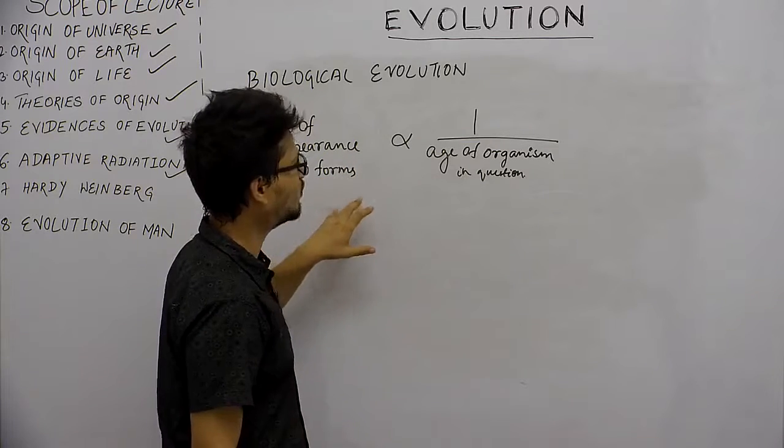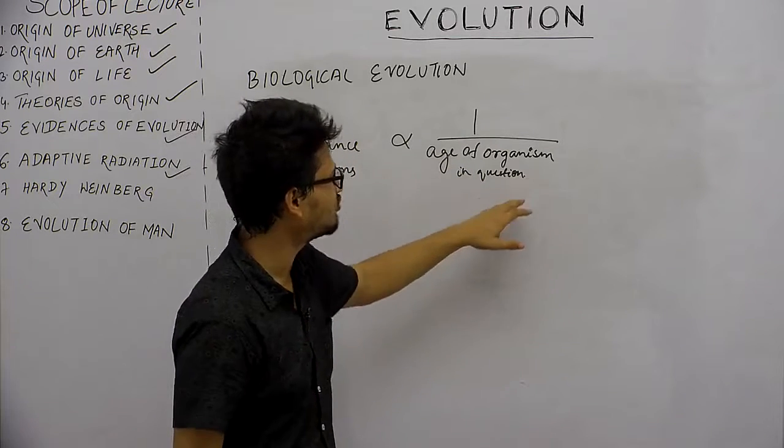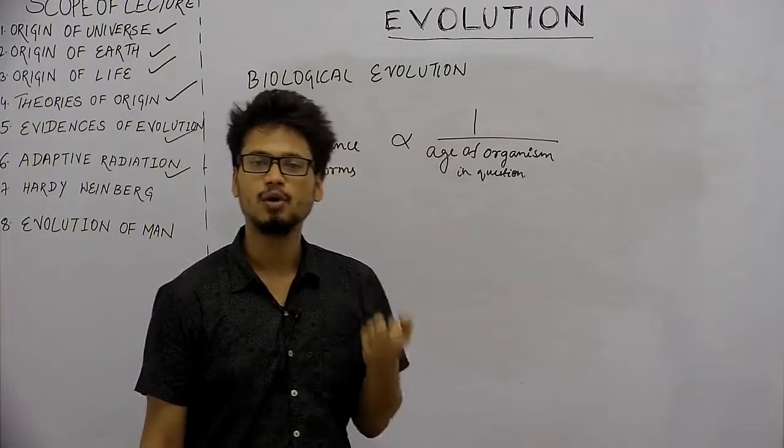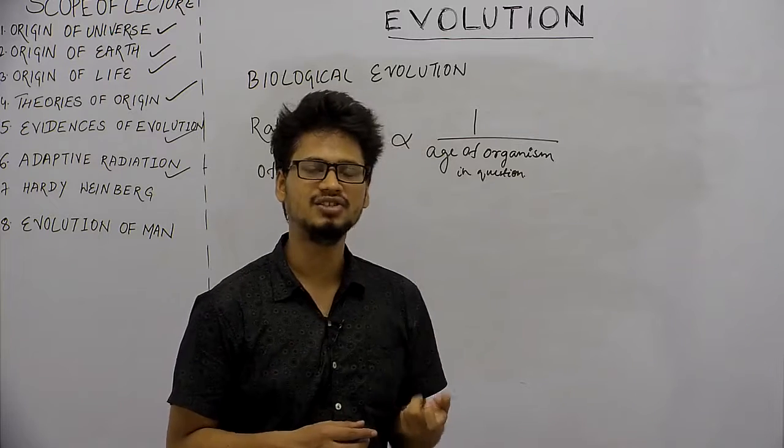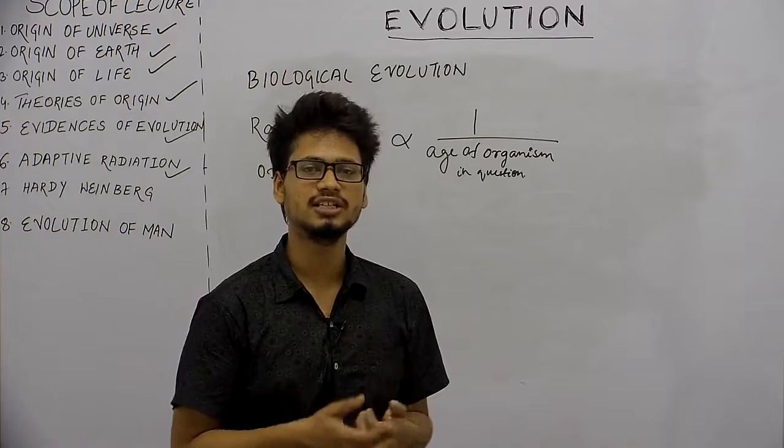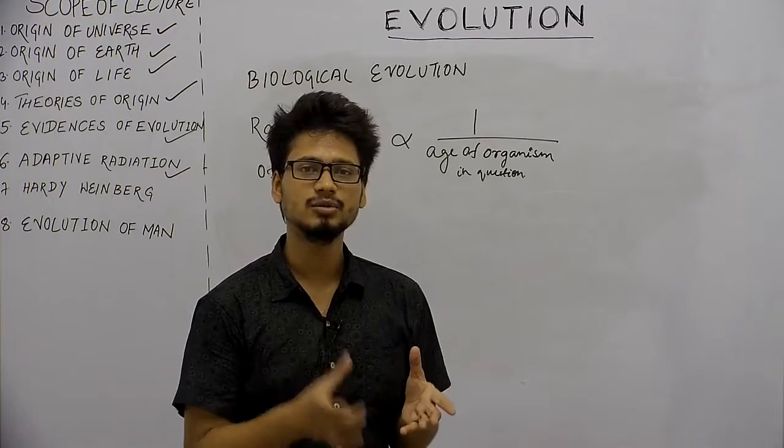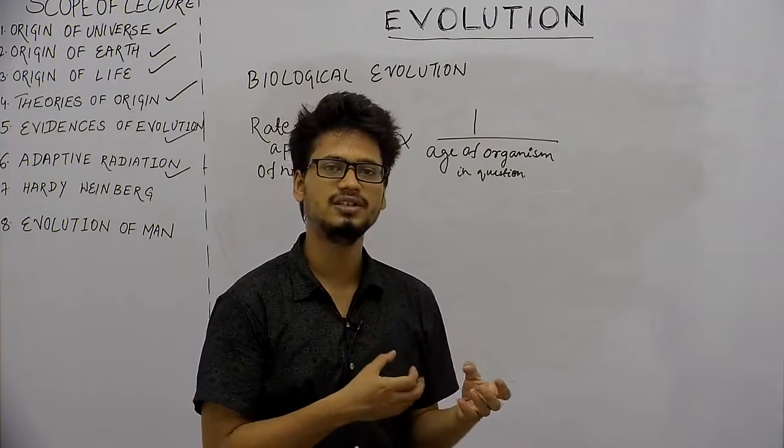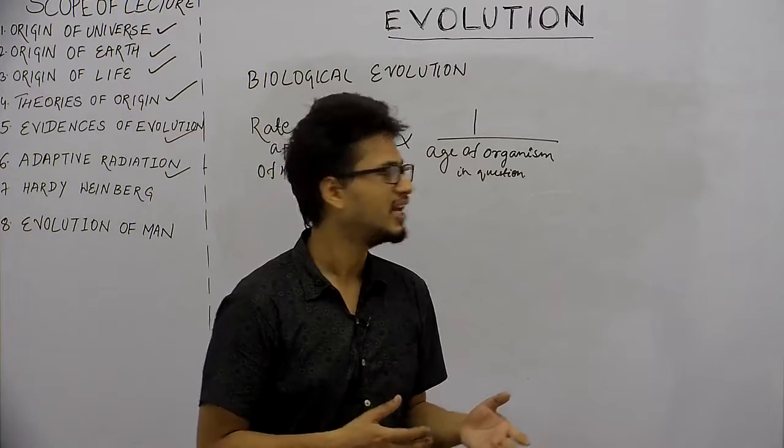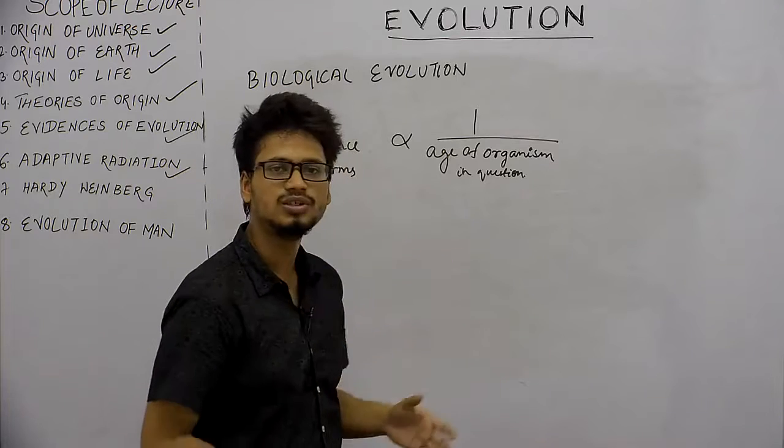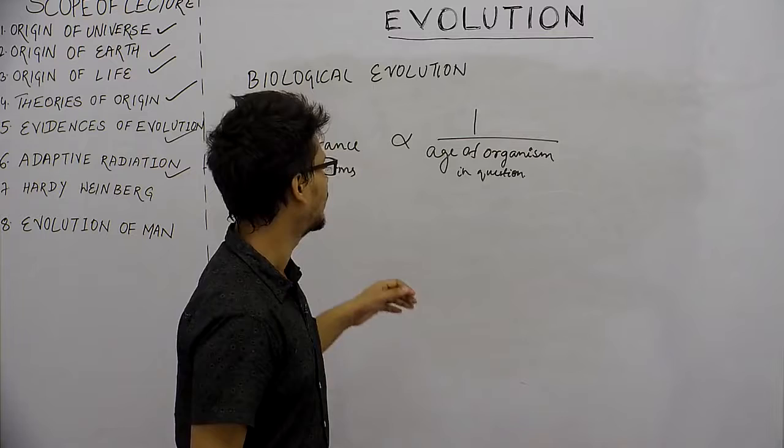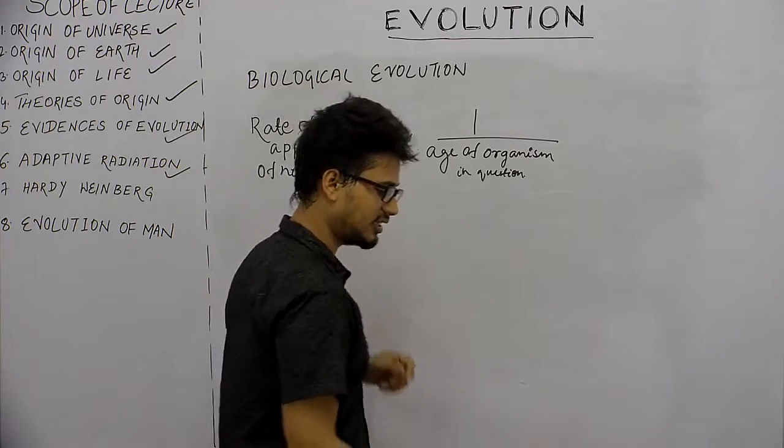Rate of appearance of new forms is inversely proportional to the age of organisms in question. This means that if an organism's lifespan is small, the evolution of the next generation will be very quick because genes can be passed to the next generation very quickly.